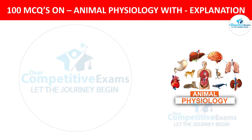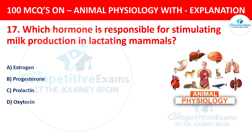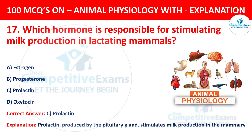Question number 17. Which hormone is responsible for stimulating milk production in lactating mammals? The options are estrogen, progesterone, prolactin, or oxytocin. The correct answer is C, prolactin. Prolactin, produced by the pituitary gland, stimulates milk production in the mammary glands of lactating mammals.